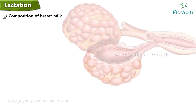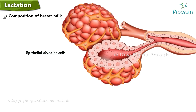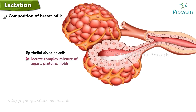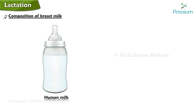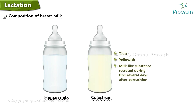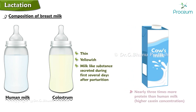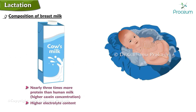The epithelial alveolar cells of the mammary gland secrete a complex mixture of sugars, proteins, lipids, and other substances that constitute milk. The composition of human milk differs from that of human colostrum — the thin yellowish milk-like substance secreted during the first several days after parturition — and from cow's milk. Cow's milk has nearly three times more protein than human milk, almost exclusively due to its much higher casein concentration, and also has a higher electrolyte content. A newborn's delicate gastrointestinal tract may not tolerate the more concentrated cow's milk.